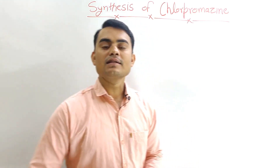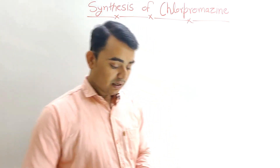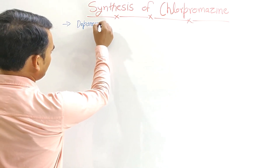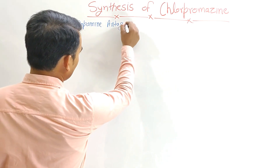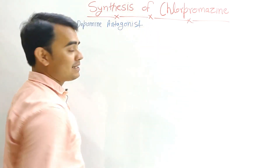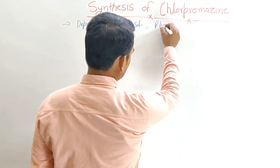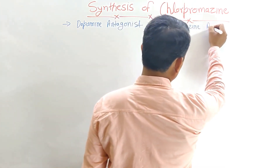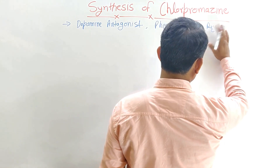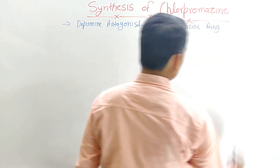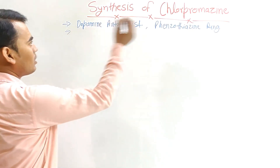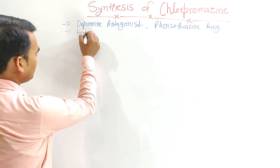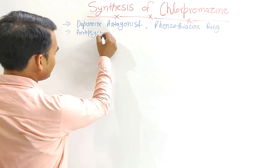Today we are going to discuss the synthesis of chlorpromazine. Chlorpromazine is a dopamine antagonist, and it has a phenothiazine ring as its basic nucleus. Chlorpromazine is mainly used as an antipsychotic.